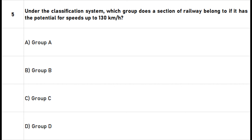Question 5: Under the classification system, which group does a section of railway belong to if it has the potential for speeds up to 130 kilometers per hour? A. Group A. B. Group B. C. Group C. D. Group D. The right answer is option B: Group B.